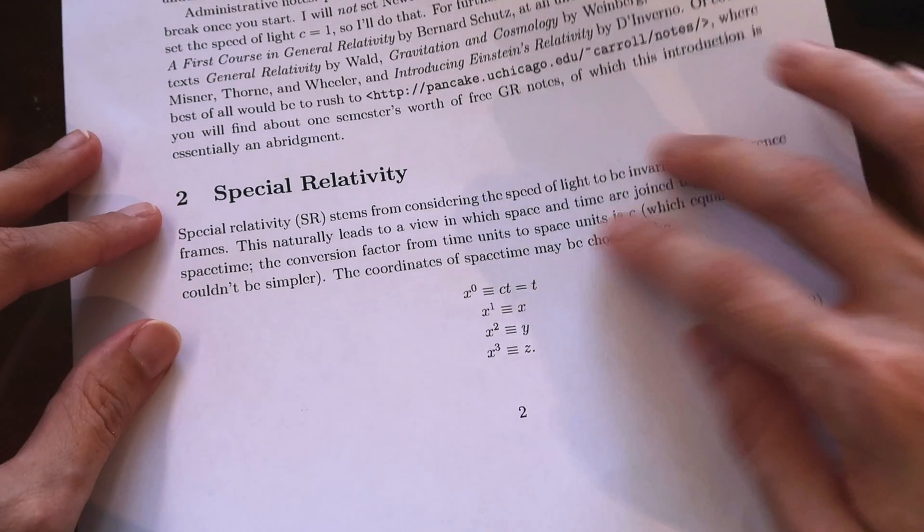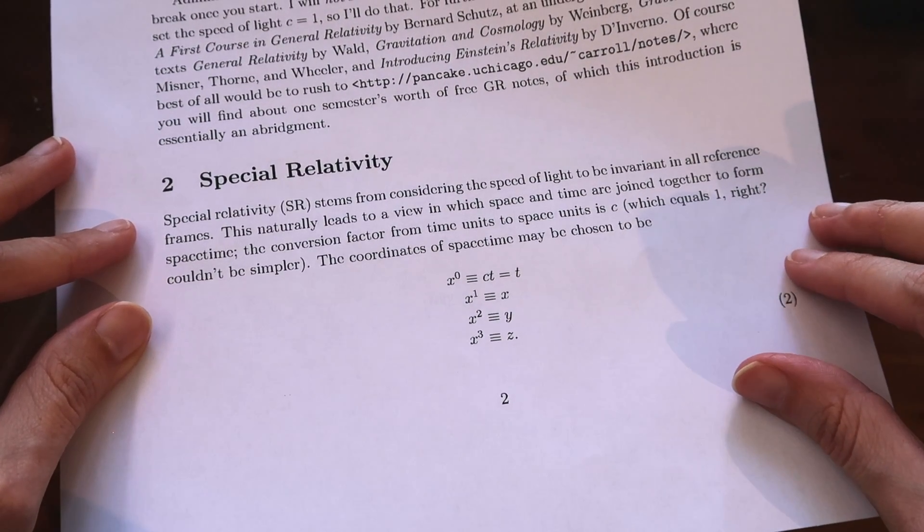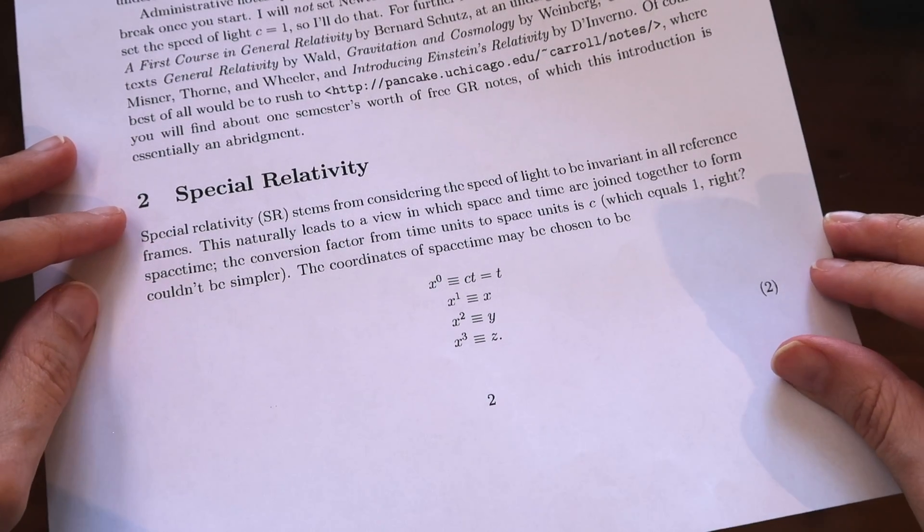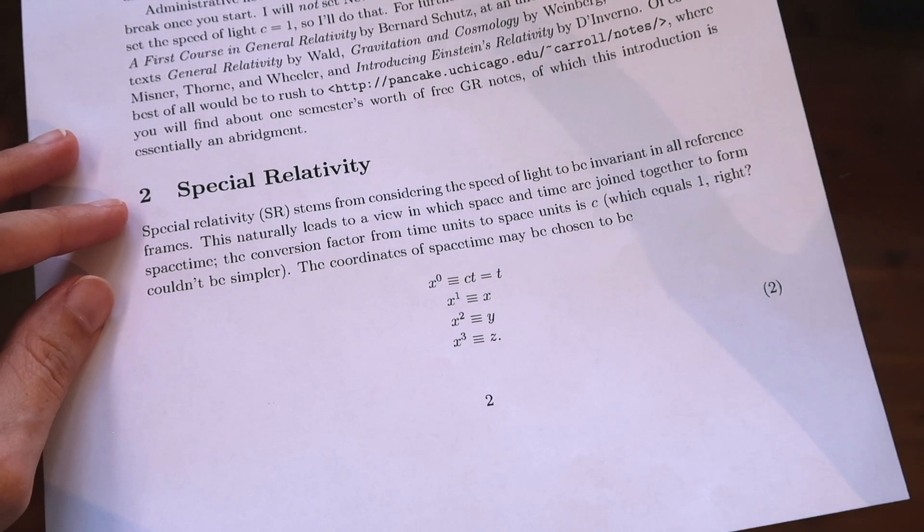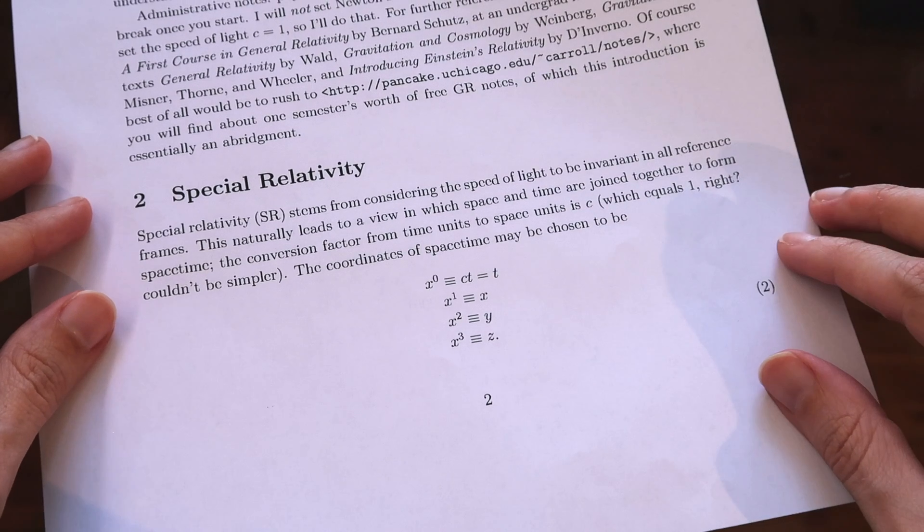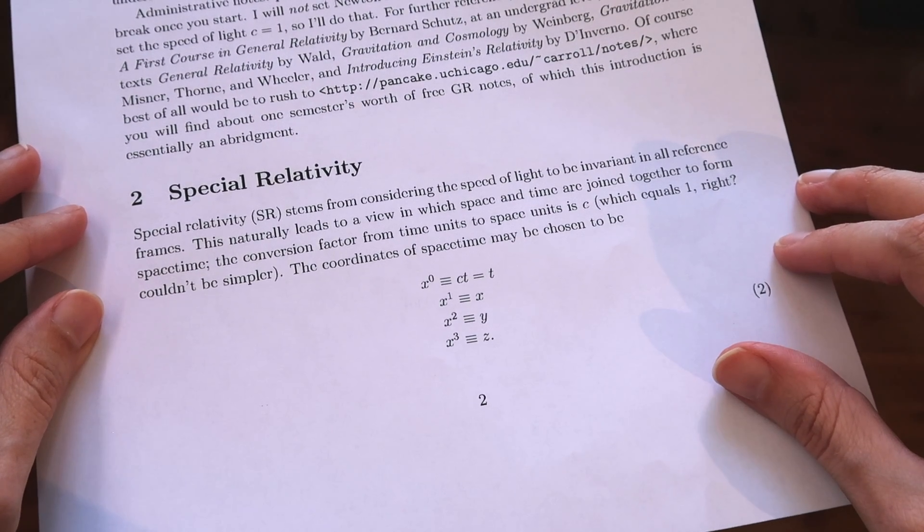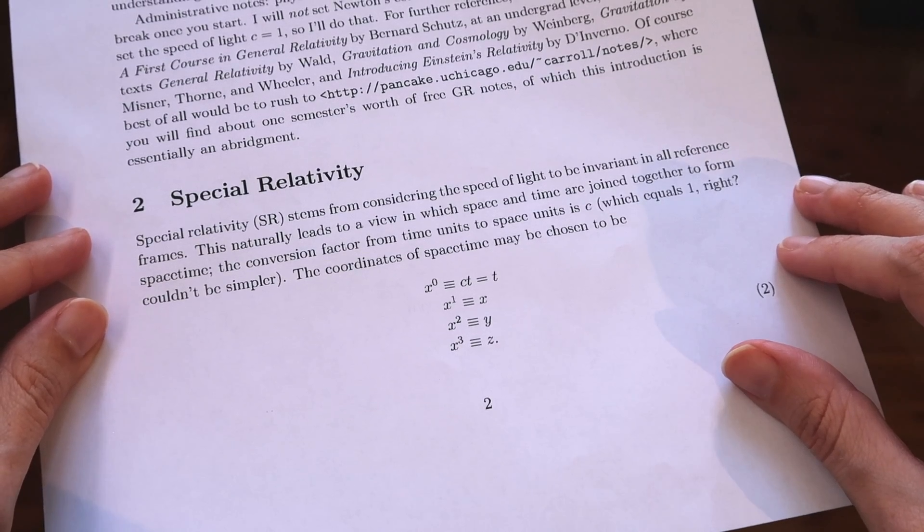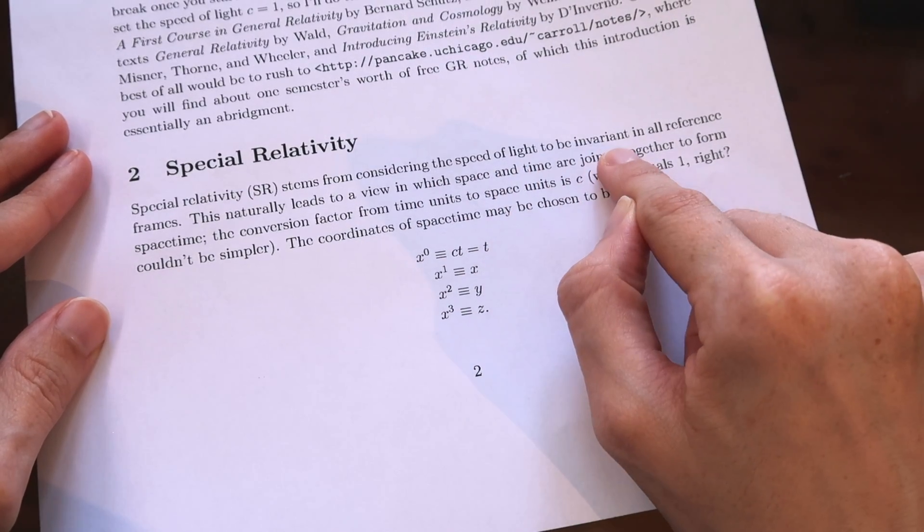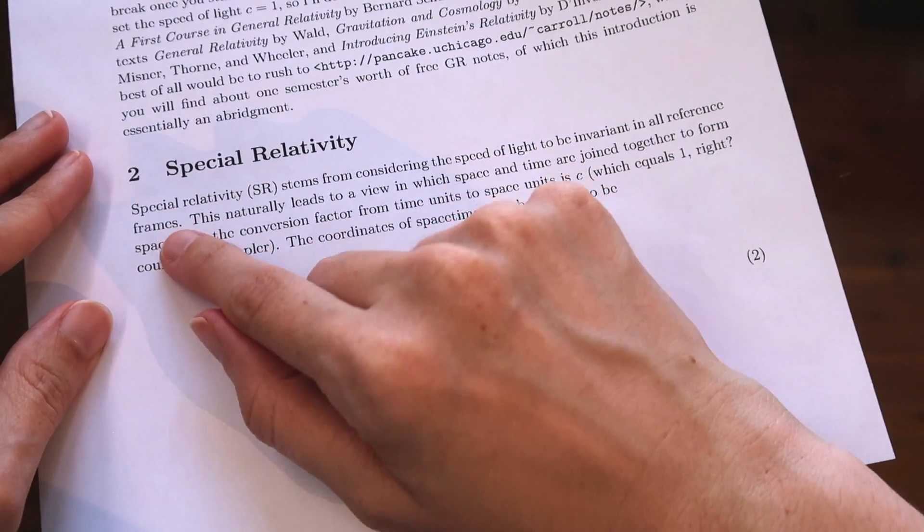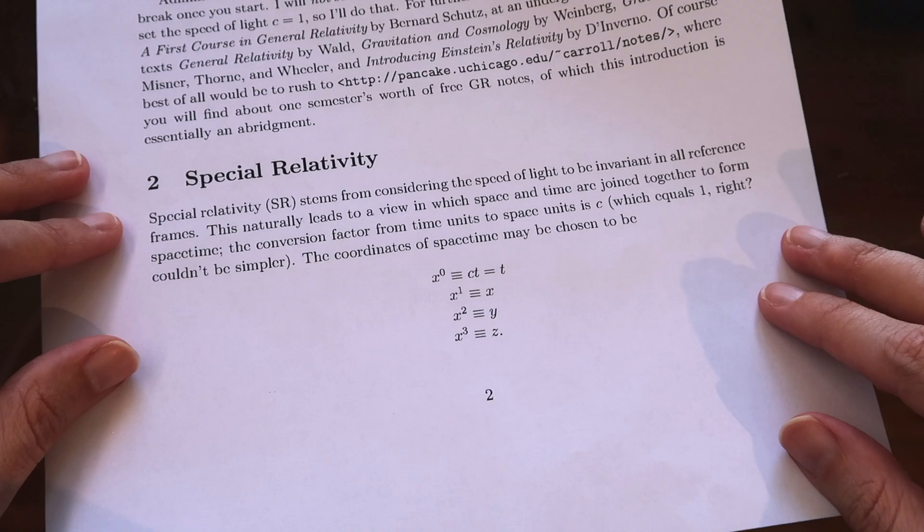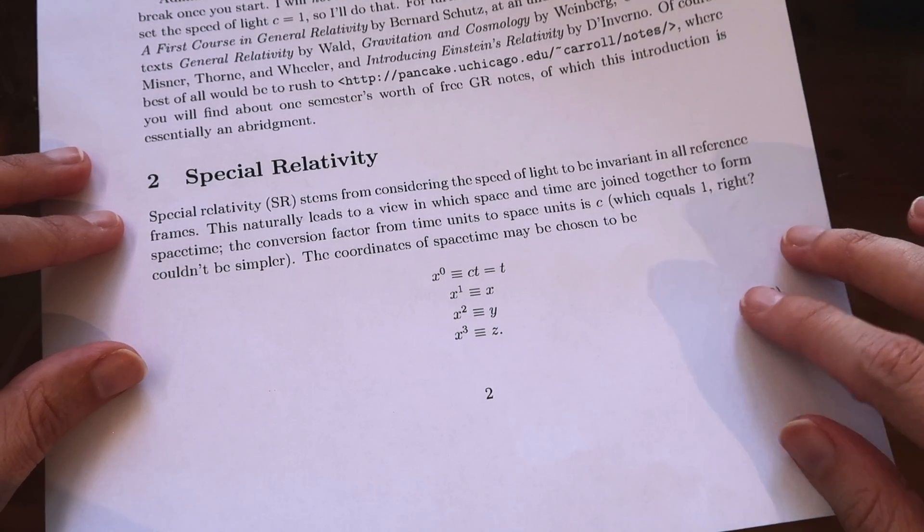The notes go on then to cover special relativity which it's more likely that you have heard of and encountered already. Special relativity is often taught at the end of high school or in undergraduate because the math that's involved is actually not too hard. You need some Pythagoras and the ability to grasp things like time dilation and length contraction. It says that special relativity stems from considering the speed of light to be invariant in all reference frames. Usually when you encounter special relativity for the first time you don't encounter it in the form of four vectors but that's what we go on to have to learn here.